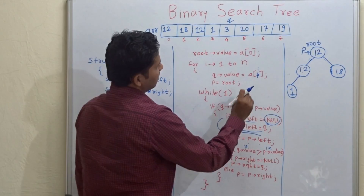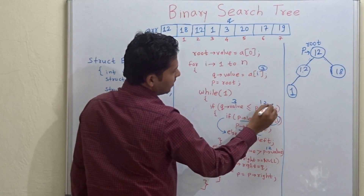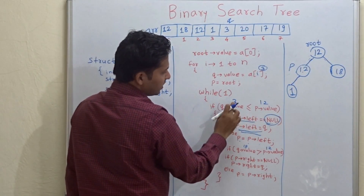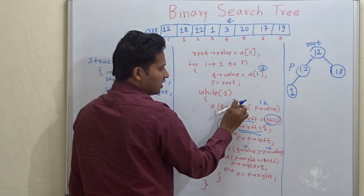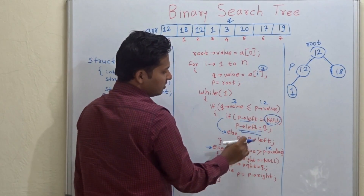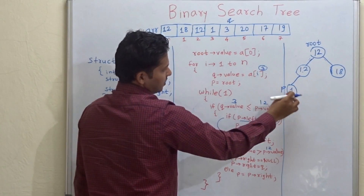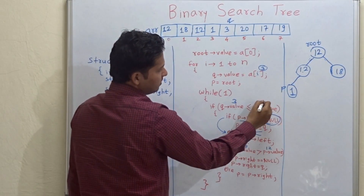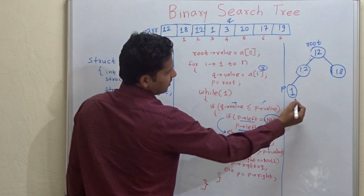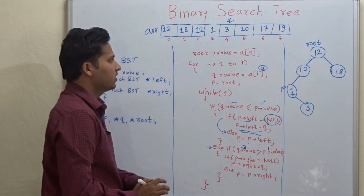The while loop executes again: 3 is less than or equal to 12, so go left, but the left is not null, so p moves to the left of p again. Now check whether 3 is less than 1 — no. So go to else: is 3 greater than 1? Yes. So we can attach 3 to the right of 1. That is how the pseudo-code is executed.